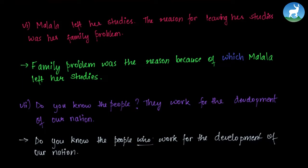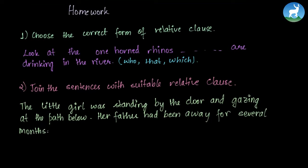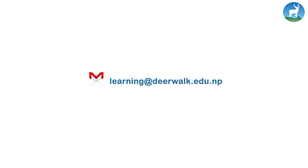This is all for today's class. We have some homework: choose the correct form of relative clause — 'Look at the one-horned rhinos. Something are drinking in the river.' Options: who, that, or which. Also, join the sentences with suitable relative clauses: 'The little girl was standing by the door and gazing at the path below. Her father had been away for several months.' Please feel free to write to us at learning@dearwalk.edu.np. Thanks for watching.